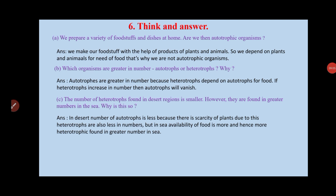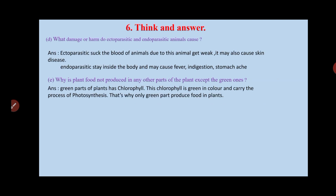The next question: the number of heterotrophs found in desert regions is smaller, but they are found in greater numbers in the sea — why? In deserts there is scarcity of water, so autotrophs are fewer in number, and because heterotrophs depend on autotrophs, heterotrophs are also fewer in deserts. In the sea, autotrophs are abundant, so the number of heterotrophs in the sea is greater.